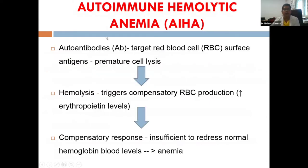The common mechanism is that antibodies target the RBC surface antigen, leading to premature cell lysis. Because of this ongoing hemolysis, the body tries to compensate with increased erythropoietin and increased RBC production. Whenever this compensatory response is insufficient to maintain normal hemoglobin levels, the patient develops anemia.